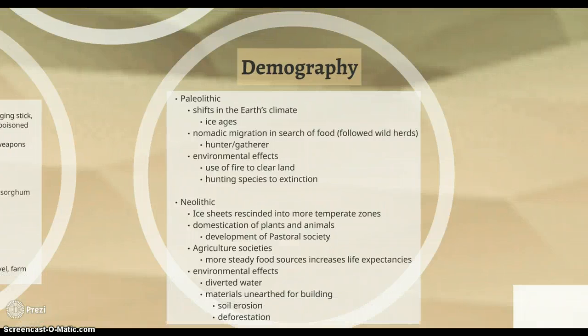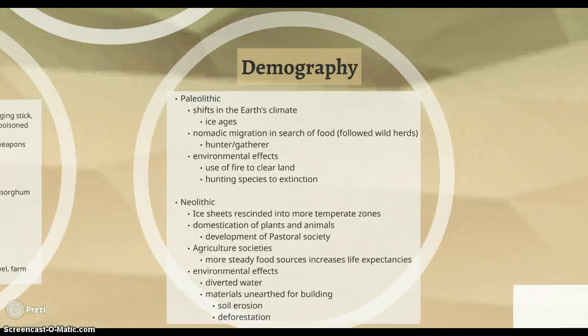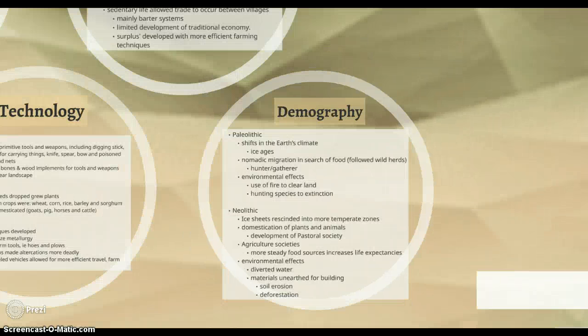On demography — in the Paleolithic, the shift in the earth's climate, the ice age, and environmental effects like using fire through the land, and also hunting species to extinction, were major factors. They just had to follow their herds as a food source. In the Neolithic, as the ice age melted, agriculture and pastoral societies developed. Environmental effects again included soil erosion and deforestation, but agricultural societies also increased life expectancy due to the steady food supply.